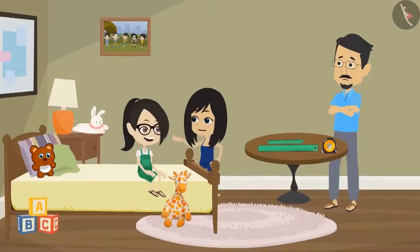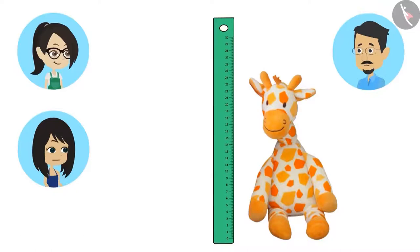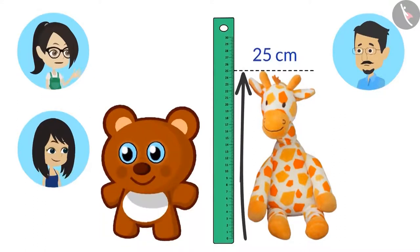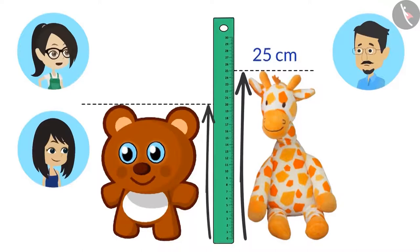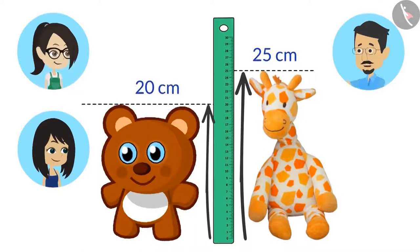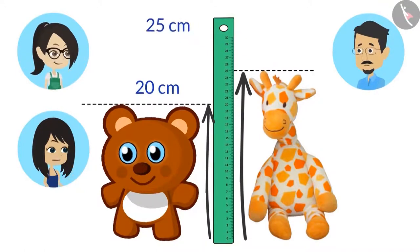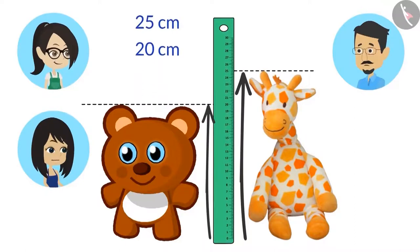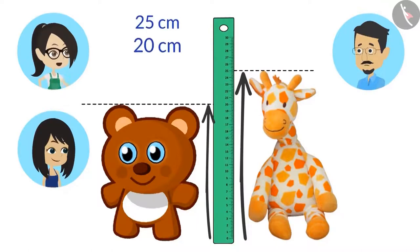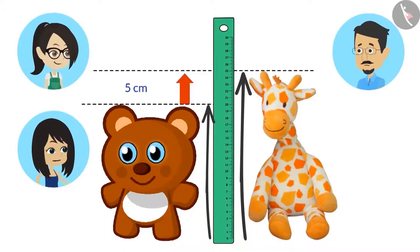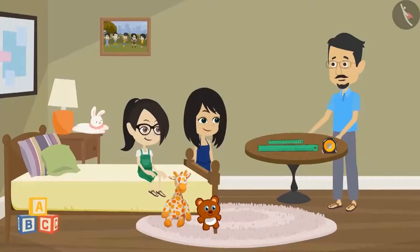Come, let us measure our toys, Vandana. I will measure the length of my toy giraffe. Your giraffe is 25 centimeters tall. Now I will measure the height of my bear. Your bear is 20 centimeters tall. Can you both tell how much shorter the bear is than the giraffe? Yes, Uncle. We will subtract the height of the bear from the height of the giraffe. The giraffe is 25 centimeters and the bear is 20 centimeters. Subtracting 20 from 25 gives us 5 centimeters — the giraffe is 5 centimeters taller than the bear. You both answered it correctly.